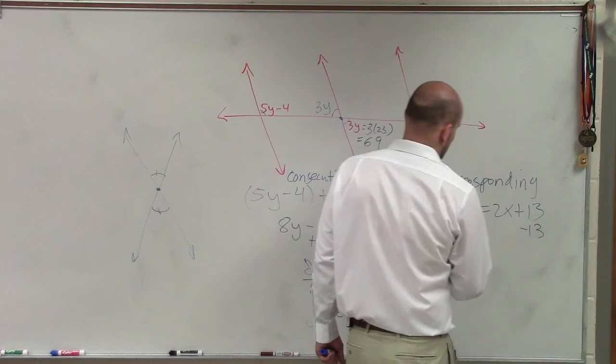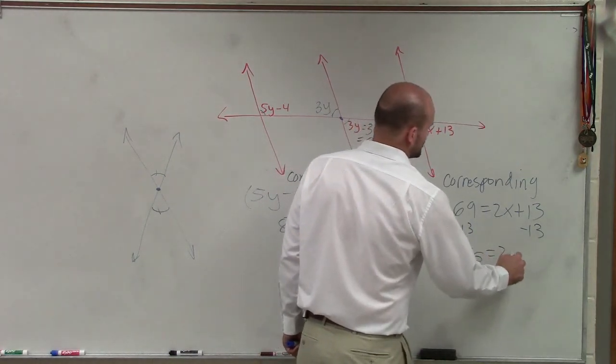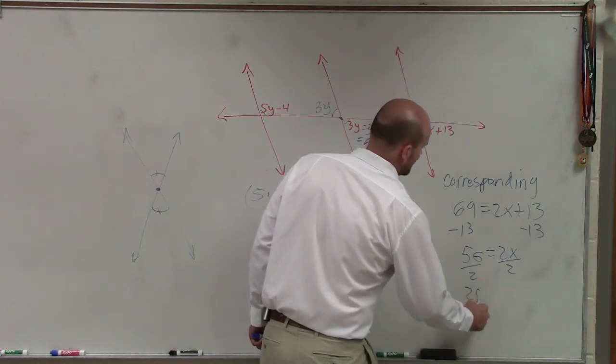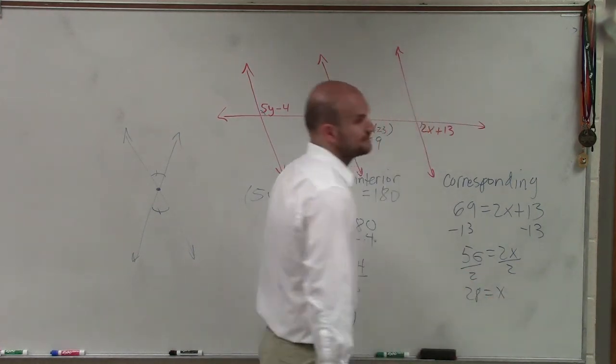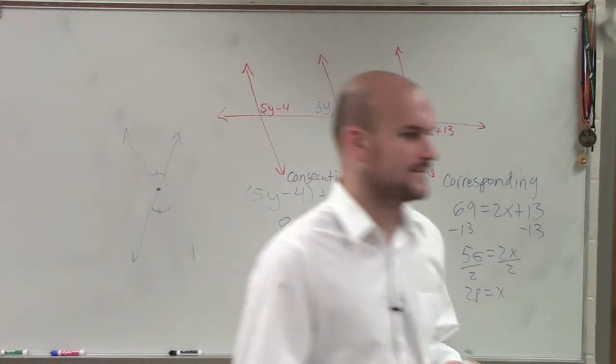OK. So now, I subtract 13. Therefore, I have 56 equals 2x. Divide by 2. 28 equals x. OK? That's your answer.